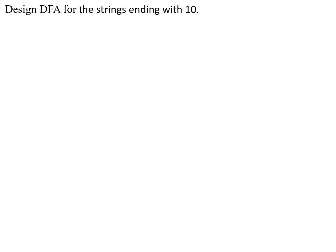Hello, hi everyone. Today in this video I will discuss one DFA problem which might be seen in any programming examination. The problem is to design a DFA for the string ending with one zero. Let's try to understand the problem statement. The condition given is that any string can take any zeros and ones, but it should end with one zero.